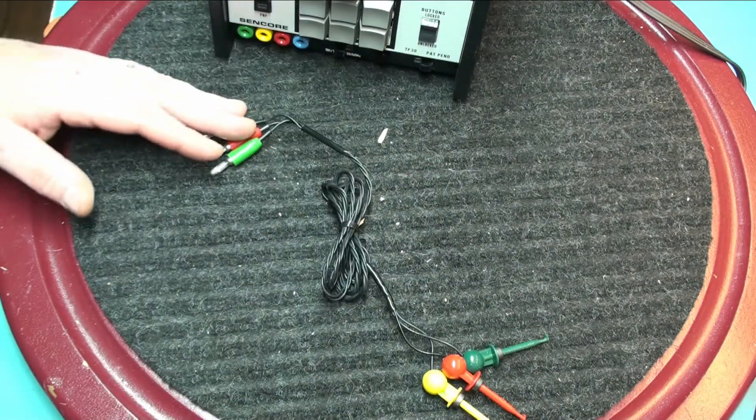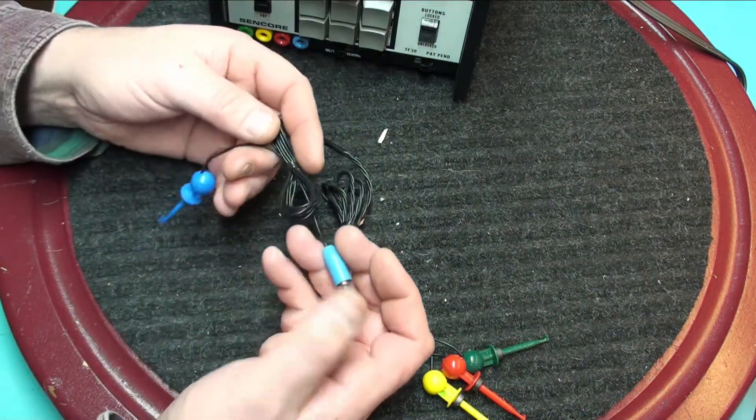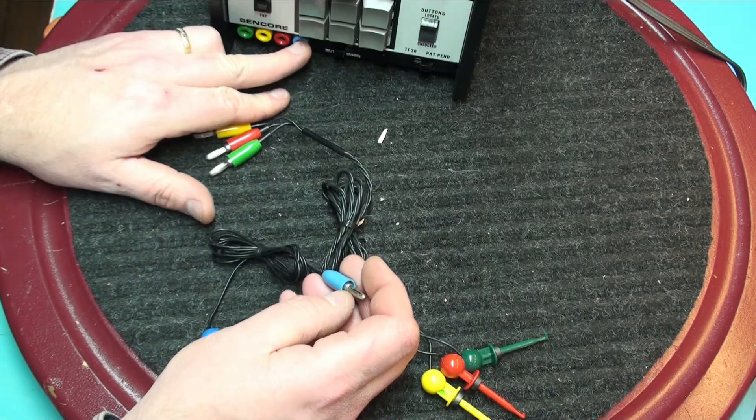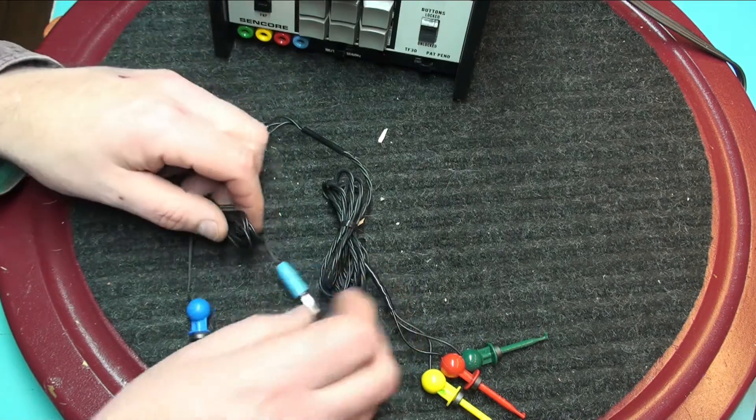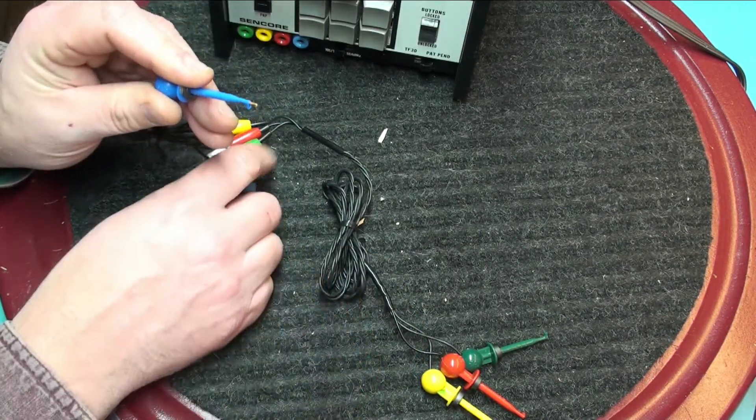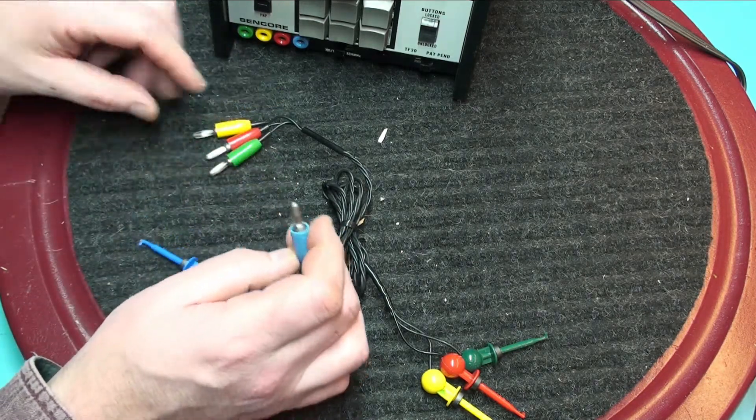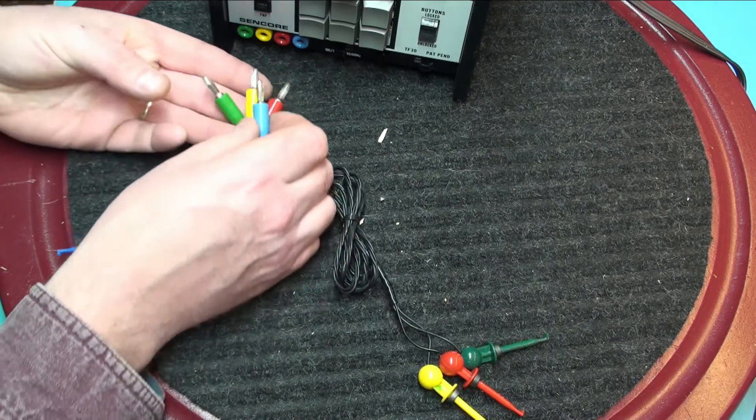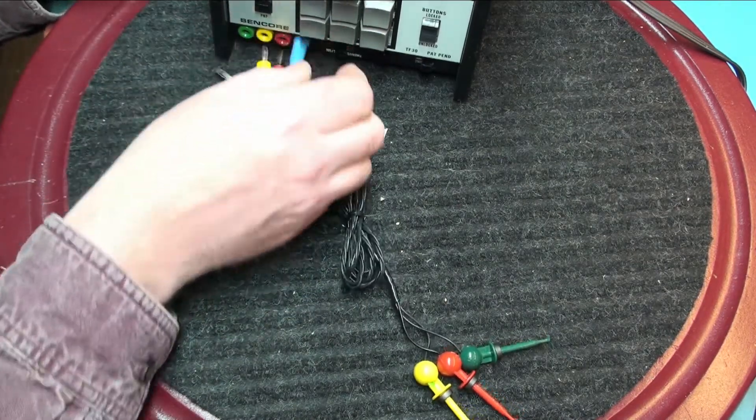It also comes with another test probe. This is for gate 2 on FETs. This as well is in great shape. The grabber is in good condition. All the ends are corrosion free. They all slide in appropriately and make good contact.